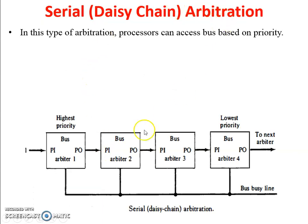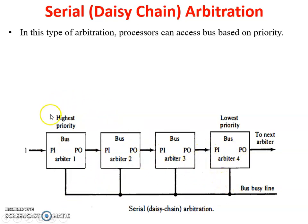This is the diagram of serial chain arbitration. In this type of arbitration, a processor can access the bus based on its priority. There are four processors in this diagram — one, two, three, four — all connected with the system bus. Priority is assigned: processor one has the highest priority, then two, then three, and processor four has the lowest priority.